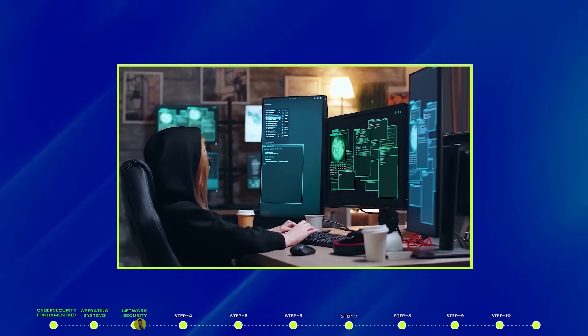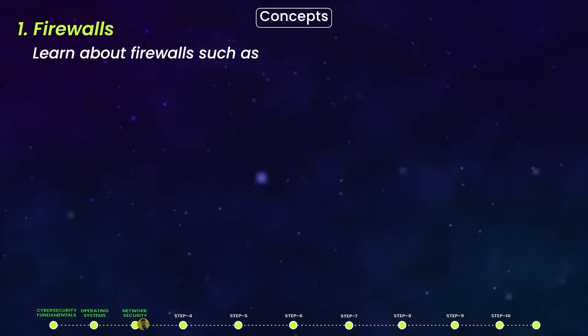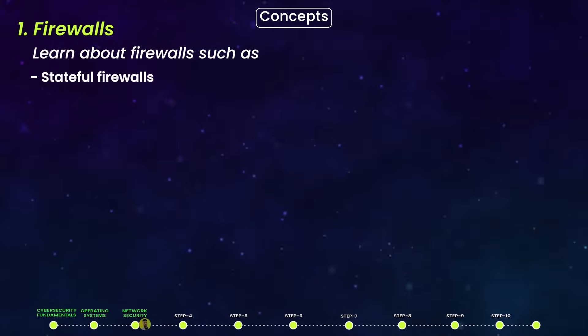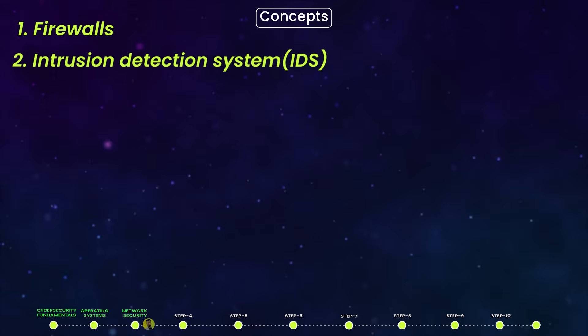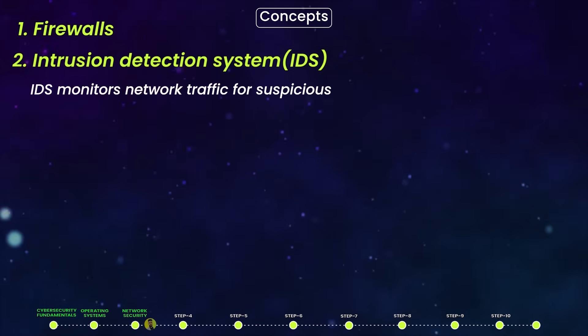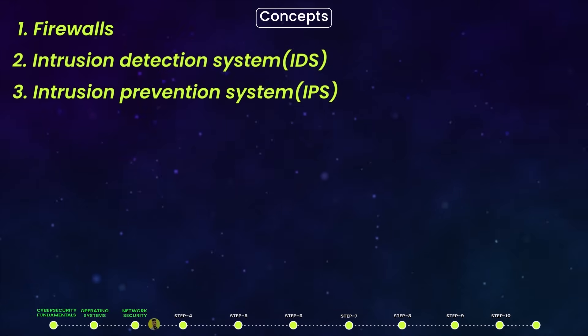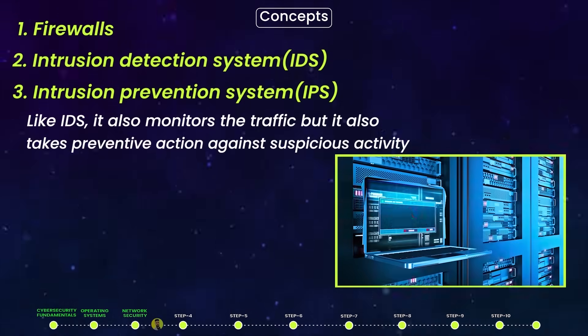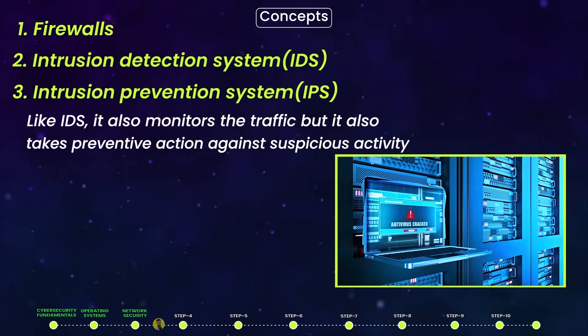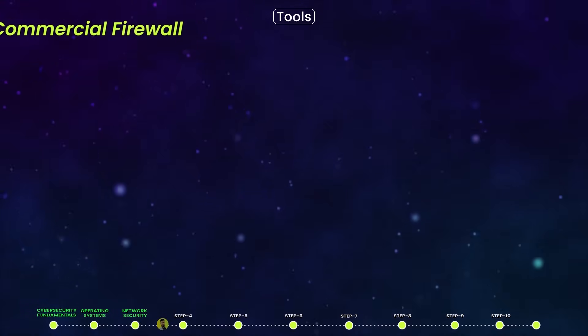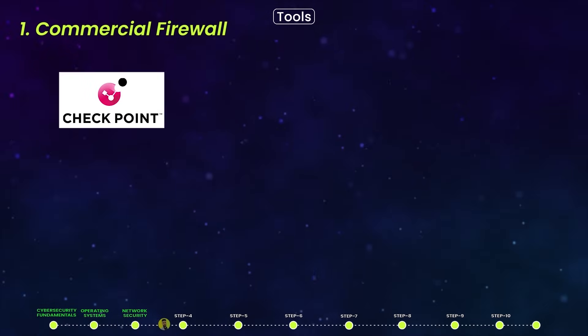Number three: Network Security. It is very important to understand how perimeter security and the first line of defense works. Learn about firewalls — stateful firewalls, web application firewalls, and next-gen firewalls. Learn about IDS (Intrusion Detection System), which monitors network traffic for suspicious activity and alerts the admin. Also learn about IPS (Intrusion Prevention System), which monitors traffic and also takes preventive action.